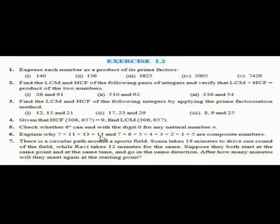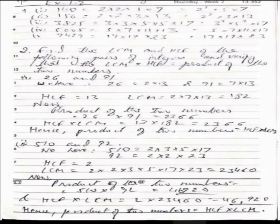Question number 6 is: explain why 7 into 11 into 13 plus 13 and 7 into 6 into 5 into 4 into 3 into 2 into 1 plus 5 are composite numbers. See the sign here, it is plus 13. Among all the multiplication, the last one is plus 13. And among all the multiplication, last one is plus 5. We have to give reasons why these are composite numbers.